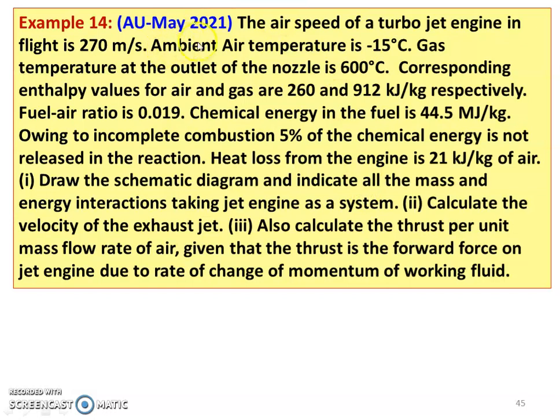Example number 14 from May 2021 question paper. The air speed of a turbojet engine in flight is 270 meters per second. Ambient air temperature is minus 15 degrees Celsius. Gas temperature at the outlet of the nozzle is 600 degrees Celsius. Corresponding enthalpy values for air and gas are 260 and 912 kilojoules per kilogram respectively. Fuel air ratio is 0.019. Chemical energy of the fuel is 44.5 megajoules per kilogram. Owing to incomplete combustion, 5 percent of the chemical energy is not released in the reaction. Heat loss from the engine is 21 kilojoules per kilogram of air.